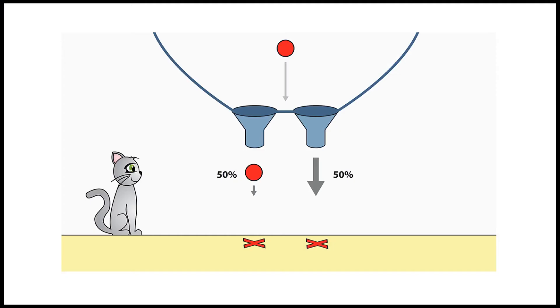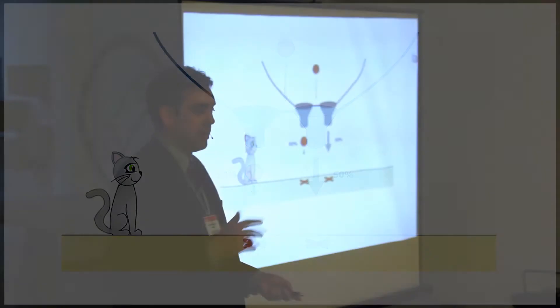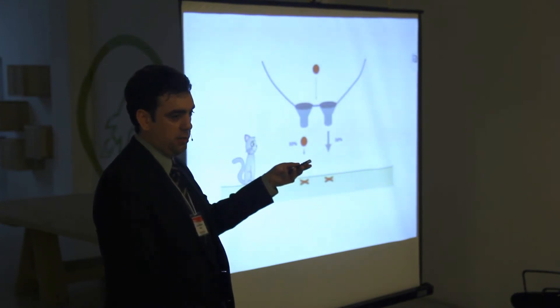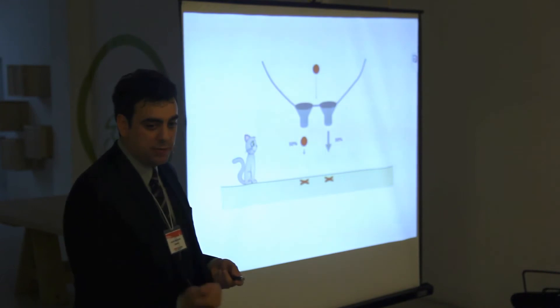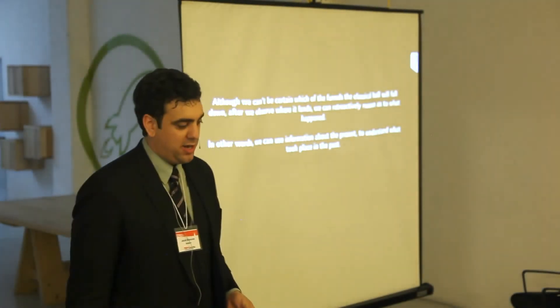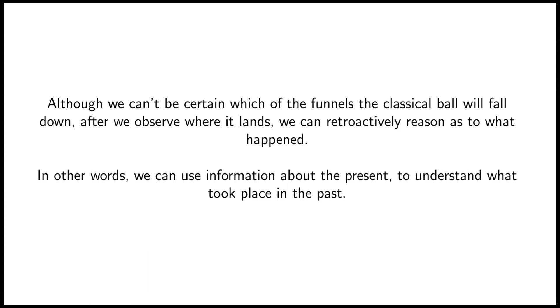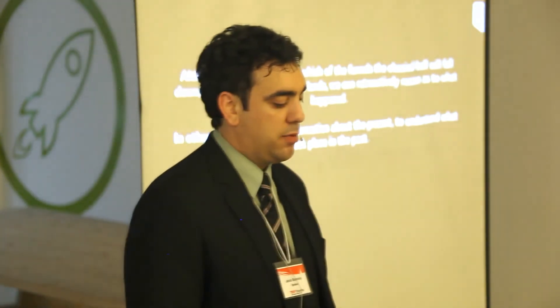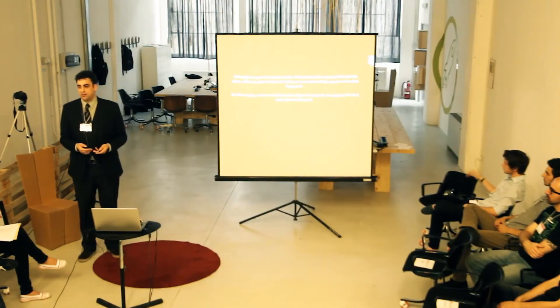The ball either goes down the right, the ball either goes down the left. Now, this is exactly what we'd expect. But let me tell it to you in a slightly different way. We have a result of a future event. And we look at the past. In the past, there was uncertainty. Okay, so there's uncertainty about the future. But then you have that result about the future. Do you have uncertainty about the past? Although we can't be certain which of the funnels the classical ball will fall down, after we observe where it lands, we can retroactively reason as to what happened. We can use information about the present to understand what took place in the past. But I'll show you that in quantum physics, you can't always know the past. That's one of the things that makes it strange.